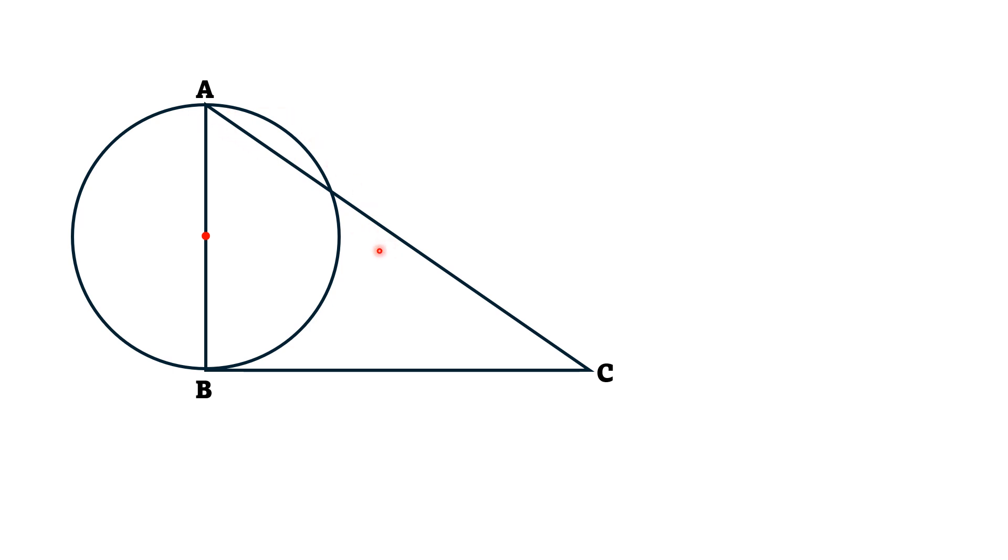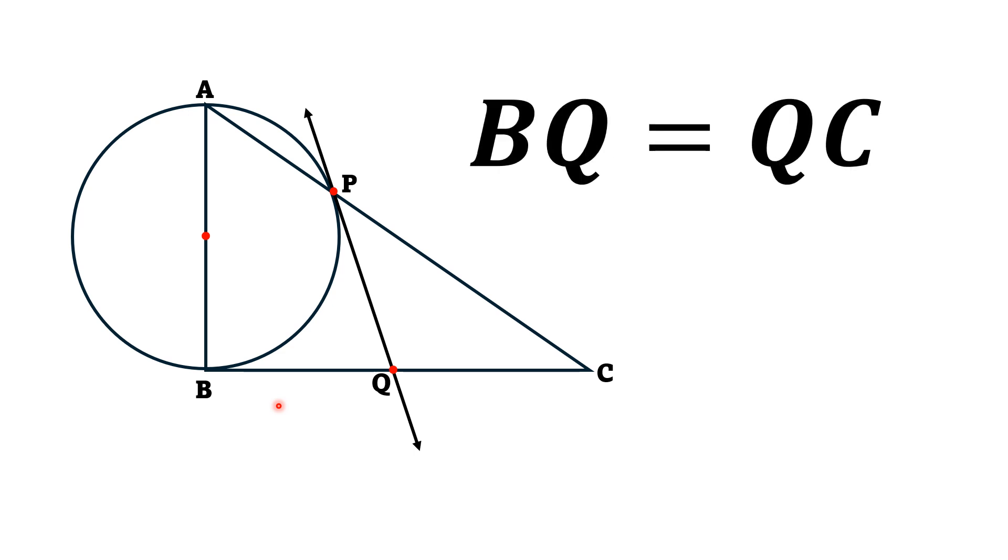The circle crosses the side AC at some point. We call this point P and a tangent is drawn from point P which intersects the line BC at some point Q. By this limited data, we have to prove that the length BQ is equal to QC, meaning this tangential line divides BC into two equal parts.